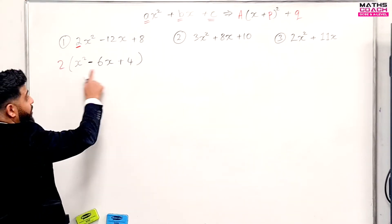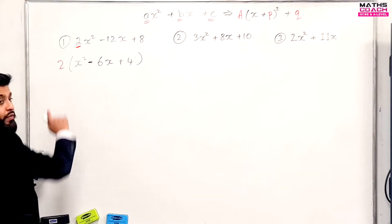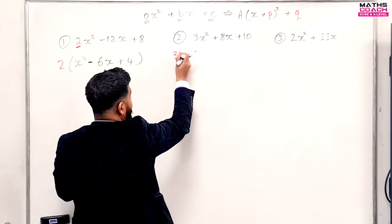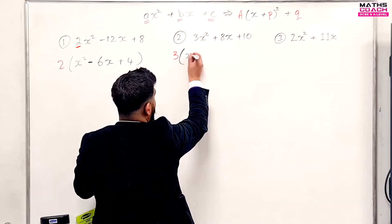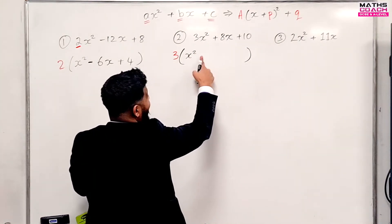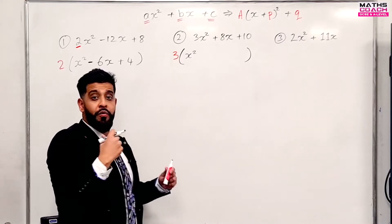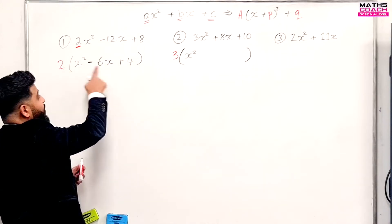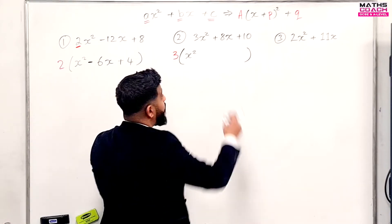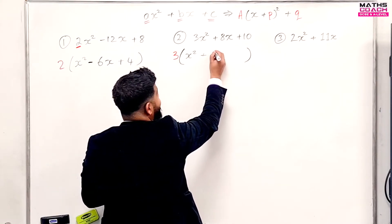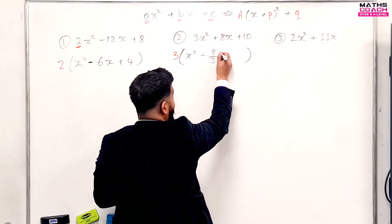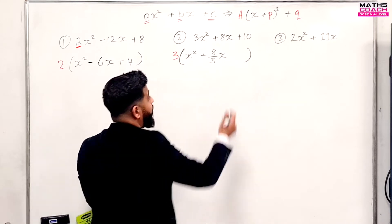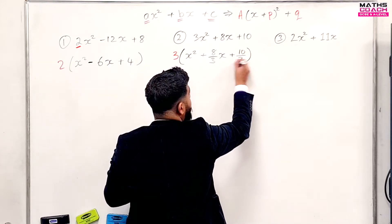This is what I will use to complete the square — I'll come back to that 2 afterwards. Now let's do the same process for the next one. I'll take out the 3, and in the bracket I'll have everything else: x squared, and what needs to go here to give me 8? Now 8 doesn't divide nicely by 3. So we can just leave it as 8 over 3 times x. And the same thing with the 10 — 10 doesn't divide nicely by 3, so we'll leave this as 10 over 3.